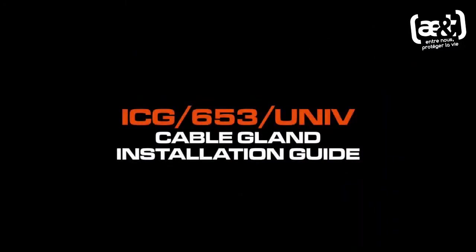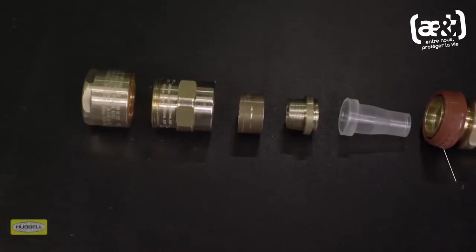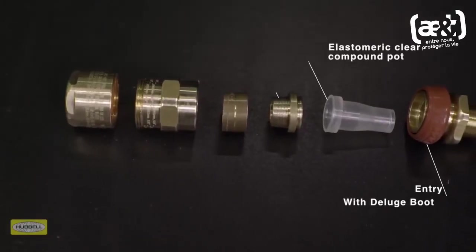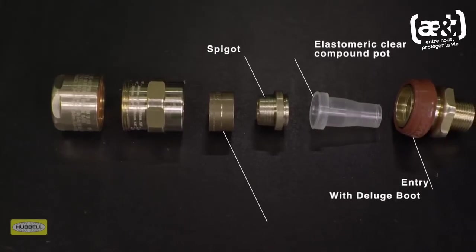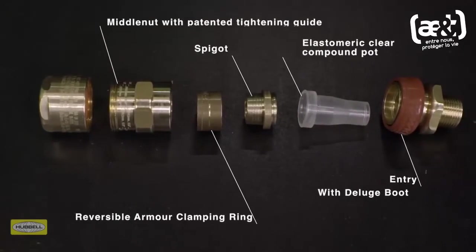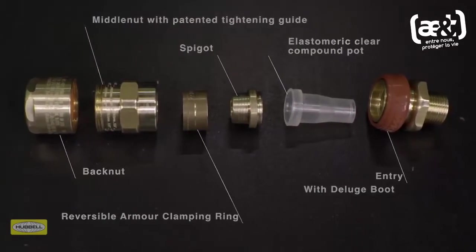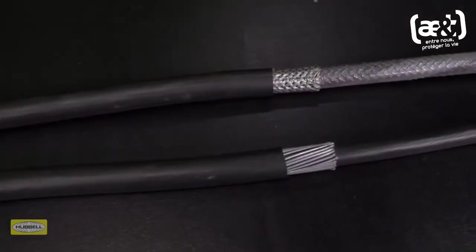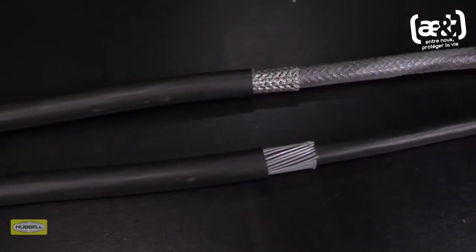The ICG653 universal cable gland consists of six key components: entry with deluge boot, elastomeric clear compound pot, spigot, reversible armor clamping ring, middle nuts with patented tightening guide, and back nut. This dual certified cable gland is designed for use with all types of elastomer and plastic insulated cables.